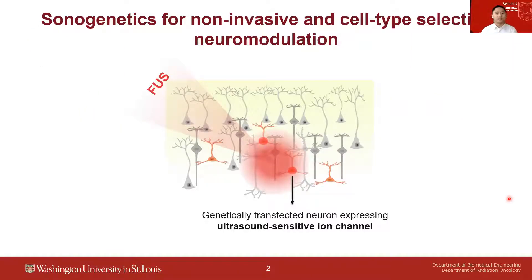Sonogenetics is the technology that combines ultrasound and genetic tools for non-invasive and cell-type selective neuron modulation. The target neuron type is transfected by viral vectors to express ultrasound-sensitive ion channels in specific neuron types. In this way, the transfected neurons are more sensitive to ultrasound than the wild-type neurons.